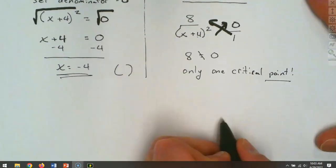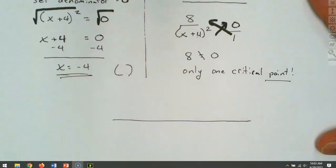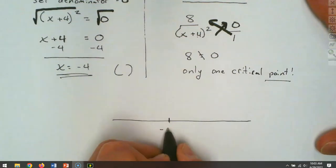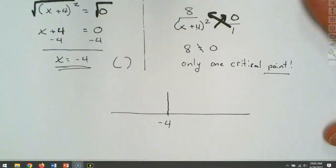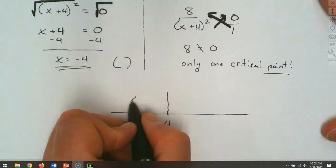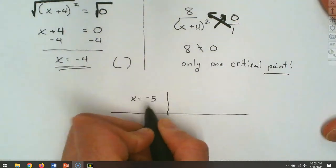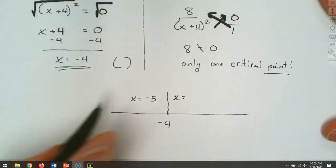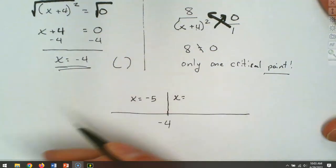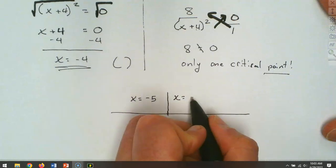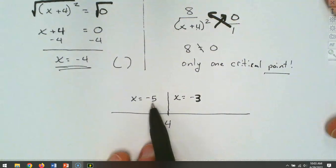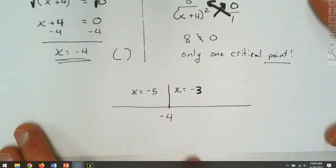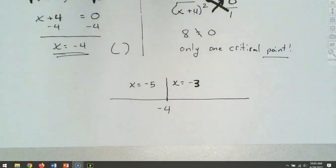When we put these on the number line, we only have the one critical point — negative 4 — but we still have to check both sides. We'll check negative 5, which is smaller, and negative 3, which is larger. You could also pick zero. You just have to pick one number smaller and one larger than negative 4.